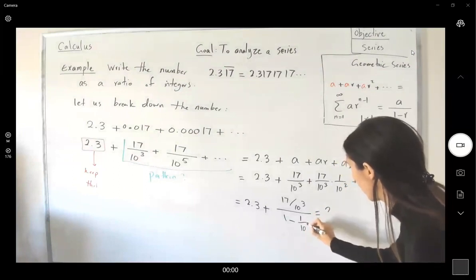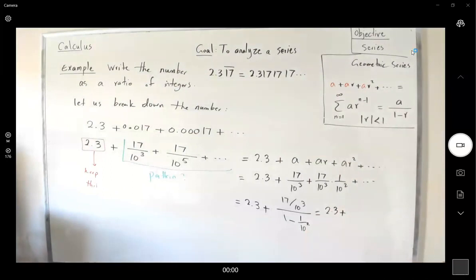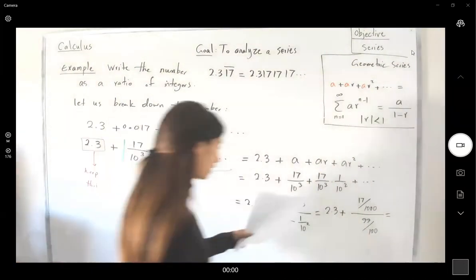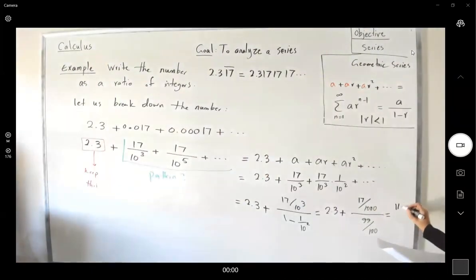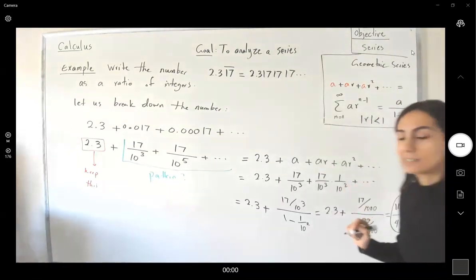So here I have 2.3 plus. So if I simplify this, I get 17 divided by 1,000 over 99 divided by 100. And if I do the addition, the final number, the final fraction, is 1147 divided by 490. So this fraction is equivalent to this decimal number.